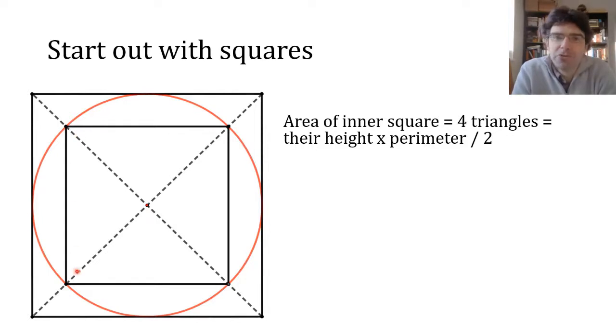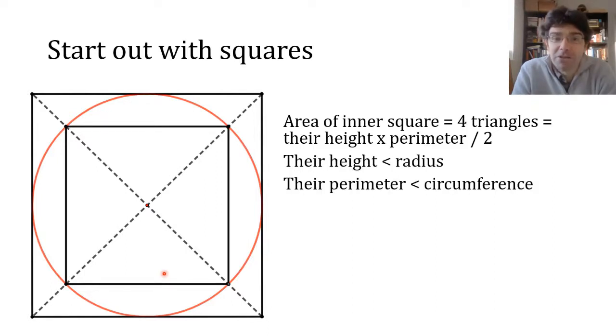So for the inner quadrant, what we've got is the height being less than the radius and the perimeter being less than the circumference of the circle, because the fastest route around these four points is to take the straight lines between them. So overall, the area of that square must be less than T.